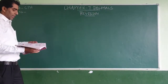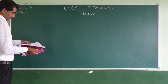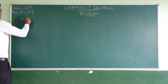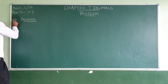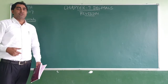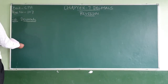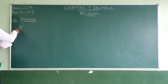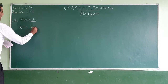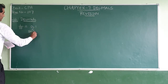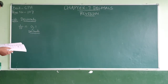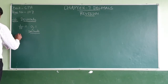Firstly, decimals. Stage number one hundred from book CP. The first thing about decimals is that any fraction can be written without a denominator. For example, 1/10 can be converted into decimals as 0.1 — that point is the decimal point. These are the basics.